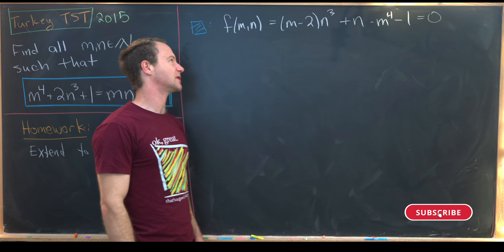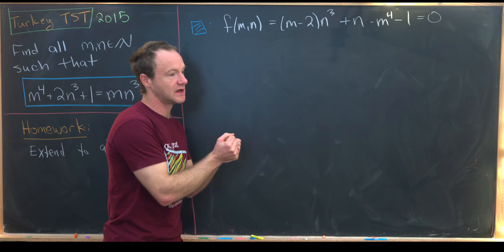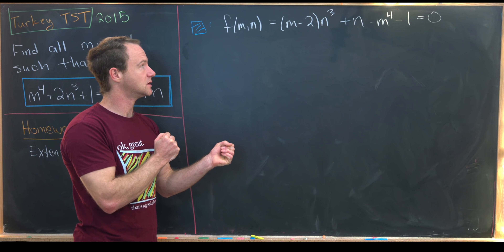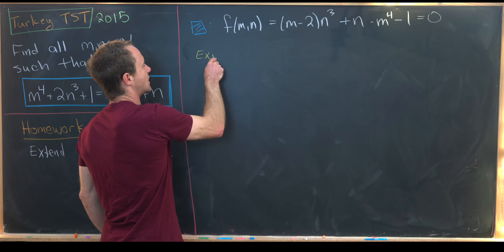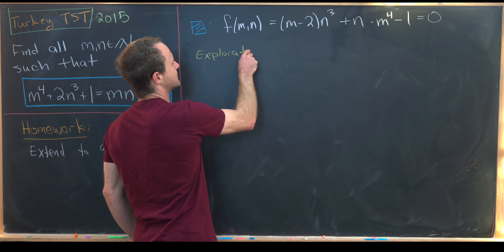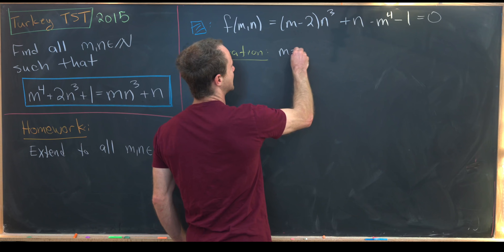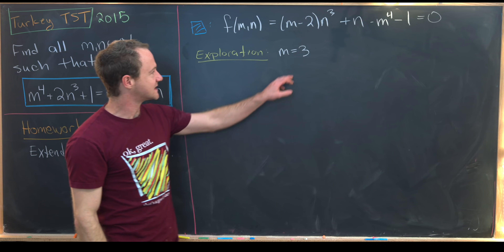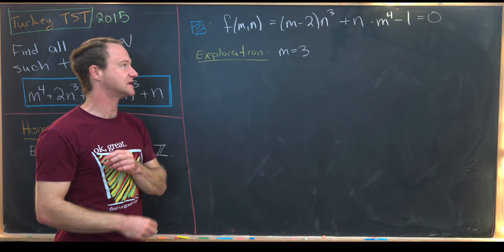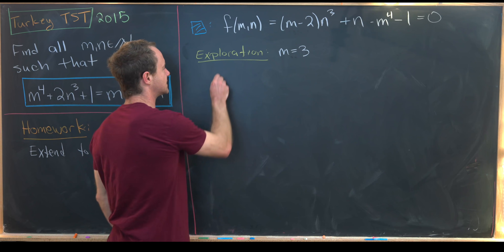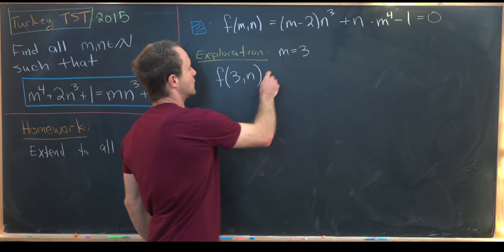Notice something special is happening around m equals 2. The behavior when m is bigger than 2 and the behavior when m is less than 2 are probably different. We can get an idea for what's going on by looking at the boundary of that behavior. The boundary would be m equals 3 — that's the smallest value of m that gives a positive coefficient in front of n cubed.